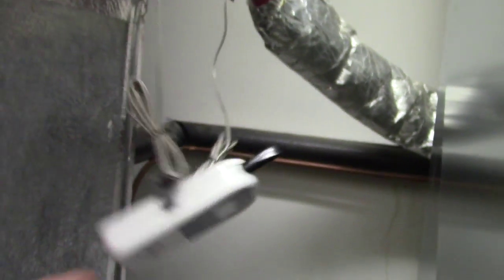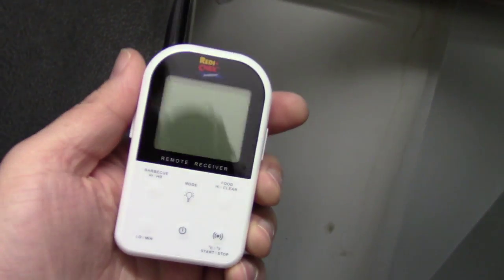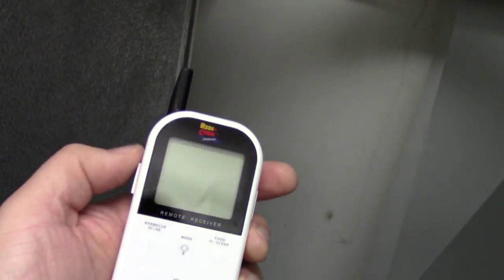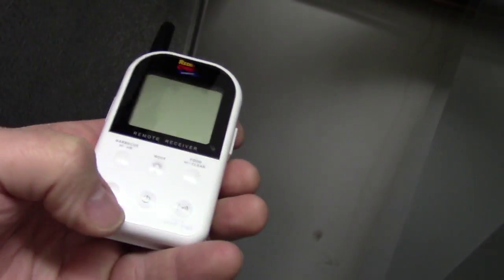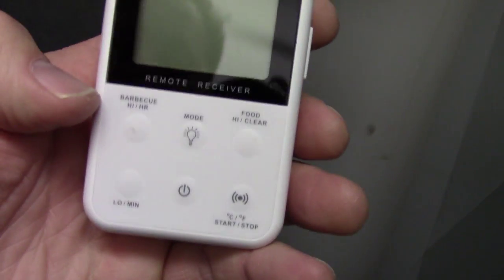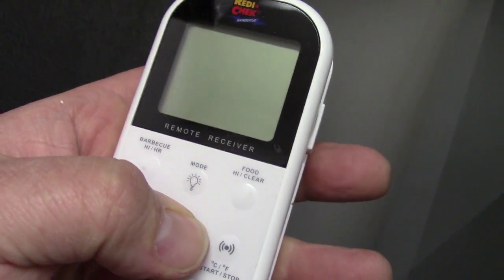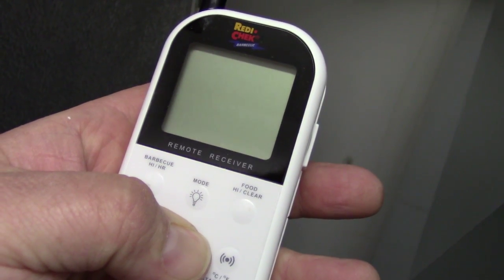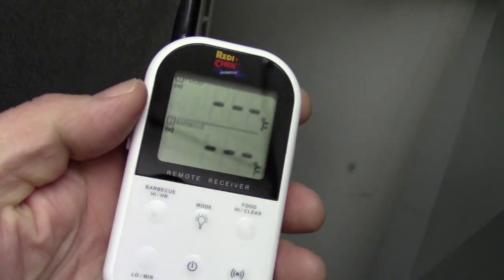Okay so now how do we transmit that signal to the receiver that you're going to have inside your house or handy. So right now this receiver is off. We're going to turn it on. You're just going to hold the button for about two seconds. It should kick on. There it is.